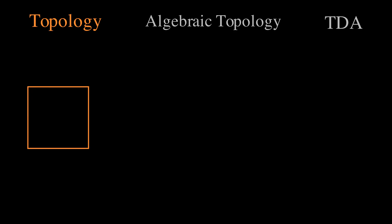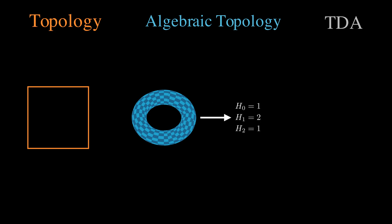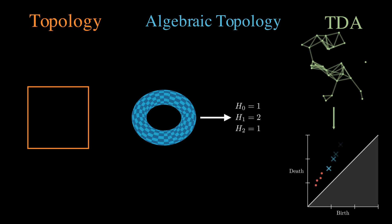Algebraic topology takes this further. It uses the language of algebra, groups, homology, and so on to study these topological spaces in a way that can be calculated and computed. And finally, topological data analysis brings these ideas into the world of data. It applies tools from algebraic topology to data sets, letting us study their shape and extract meaningful patterns like clusters or holes. So, how does that actually work in practice? Let's build it up step by step.